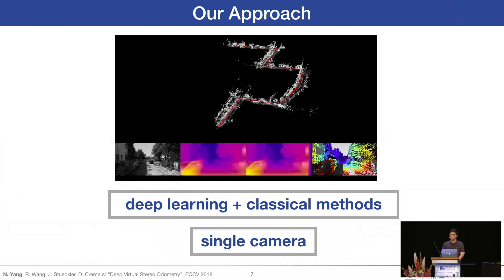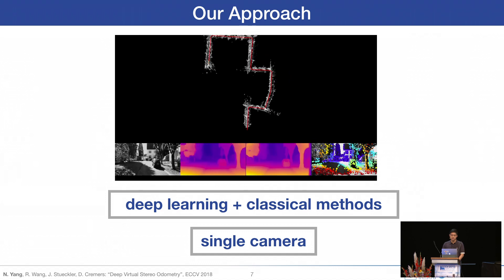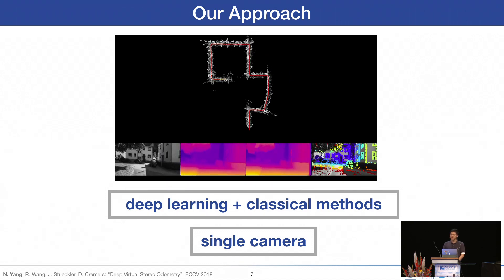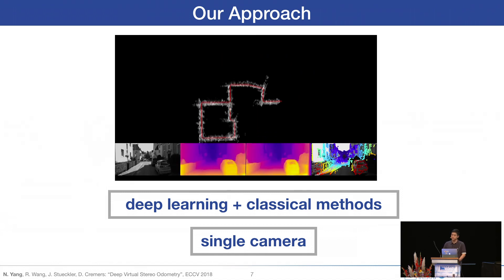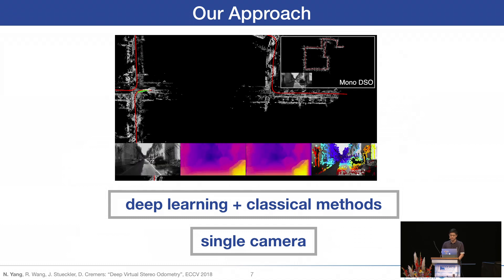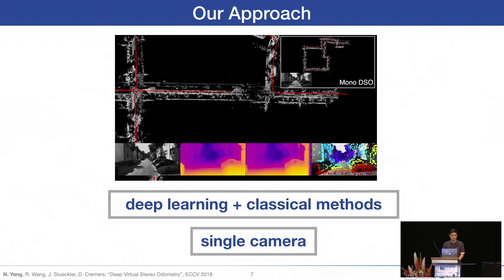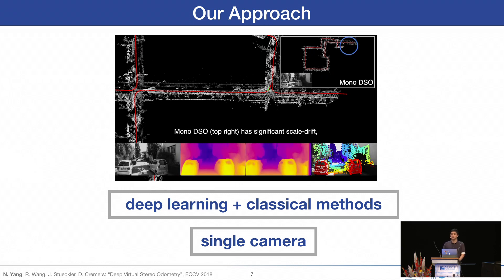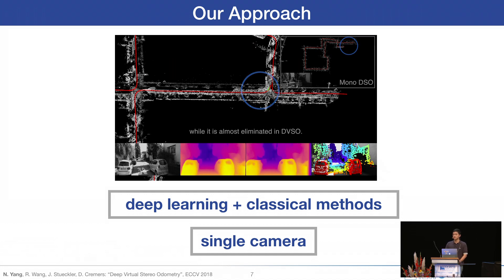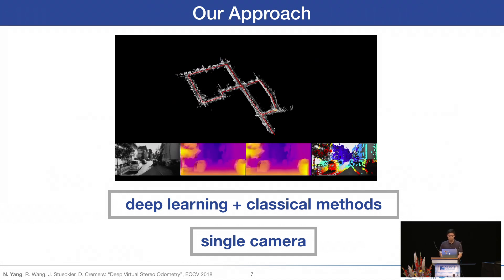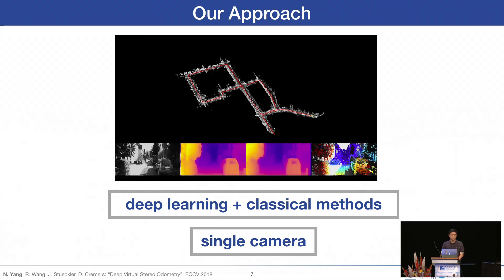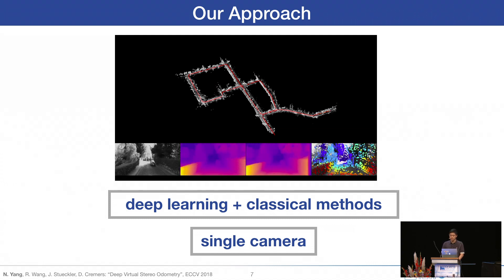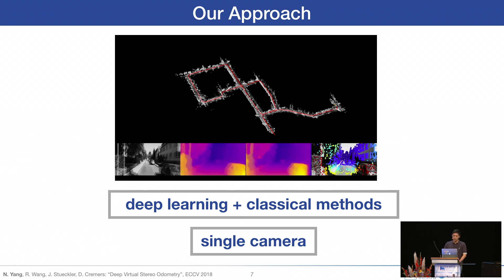In fact, the performance of our monocular visual odometry system is on par with state-of-the-art stereo methods, but with only a single camera. We achieve this by integrating deep learning-based monocular depth estimation into classical geometric methods. Deep learning can recover the metric scale of the depths from a single image because it can learn prior knowledge of objects and typical scene layout. The depth estimates are used both for initialization of new points and integrated into the optimization error function of visual odometry.